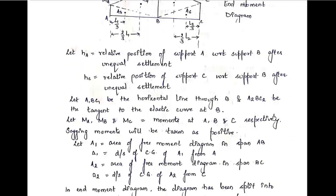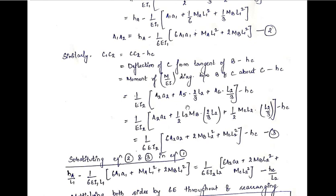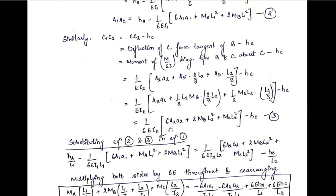For the B-to-C portion: the free moment diagram contributes A2 × a2. The end moment diagram triangles contribute a5 × (2l2/3) and a6 × (l2/3). Substituting the values of a5 and a6 as half-base-times-height and taking LCM with 6 as common, we get the expression for c1c2. This is equation number 3.